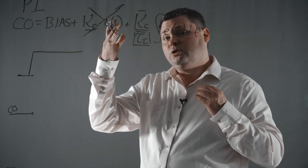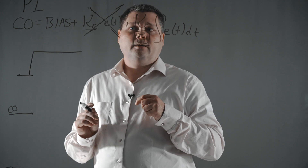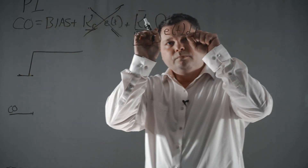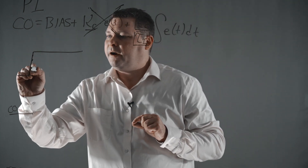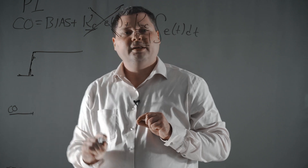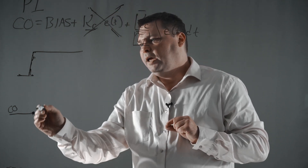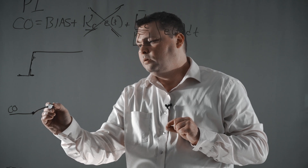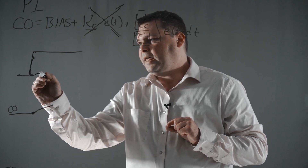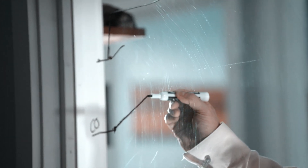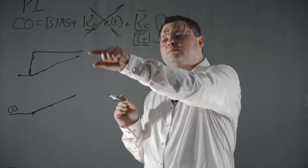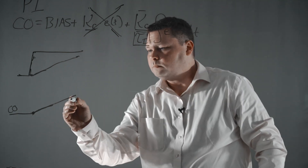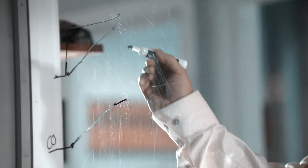Whereas a P-only controller would see a big step in error because it's looking at whatever the error is at that moment, the integral is an accumulation of error — it's actually summing up the area between the process variable and the set point. So it starts very small, and then as the process variable collects that error, the integral will accumulate that. It'll slowly push the process variable up, and as I get smaller and smaller amounts of error, the amount accumulating becomes smaller and smaller.